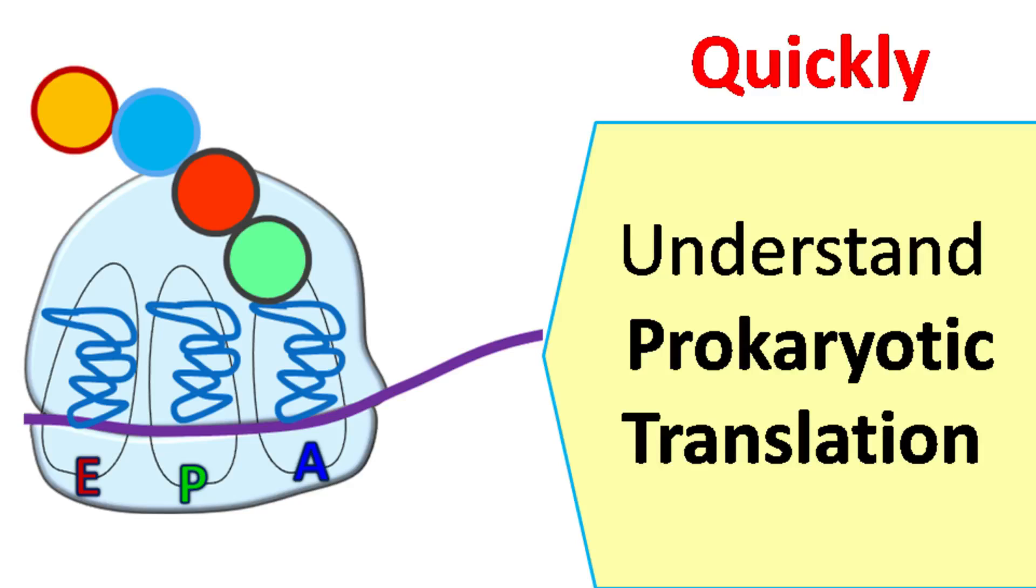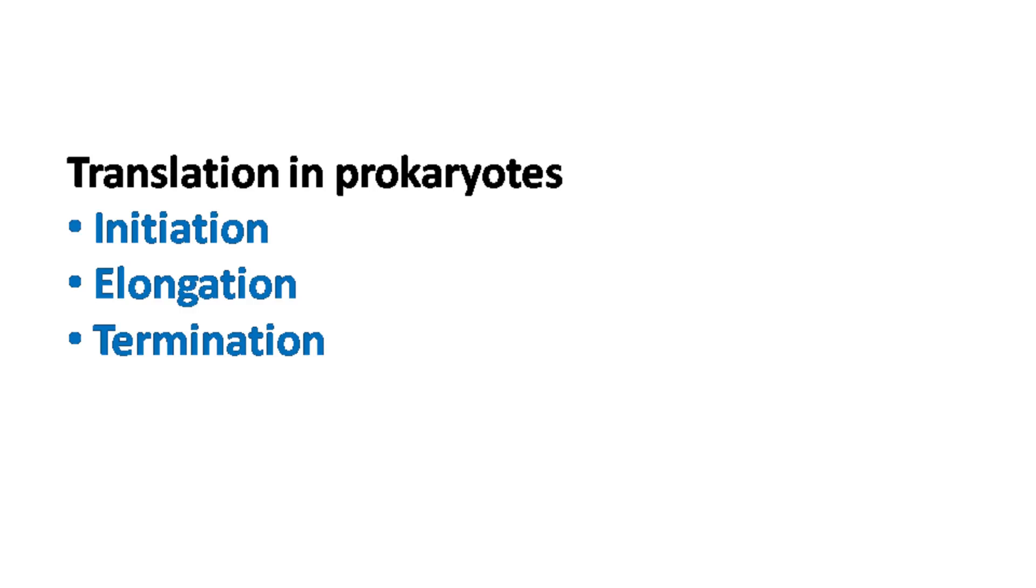Translation in prokaryotes is divided into three steps: initiation, elongation, and termination.